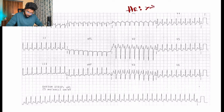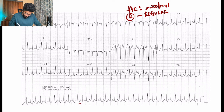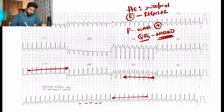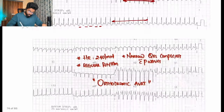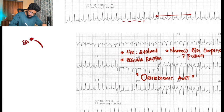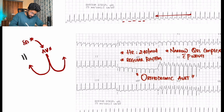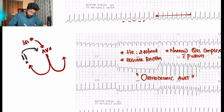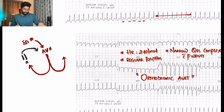For this ECG: heart rate is more than 200, regular rhythm, P wave is present, and QRS is narrow. The possible diagnosis is orthodromic AVRT — atrio-ventricular reentrant tachycardia. In this condition, an extra pathway or re-entry circuit is activated and activates the AV node again in an anterograde direction, forming an orthodromic circuit. Key point: if the SA node activates the AV node and the AV node activates the bundle branches and ventricles normally, the QRS will be narrow or normal.